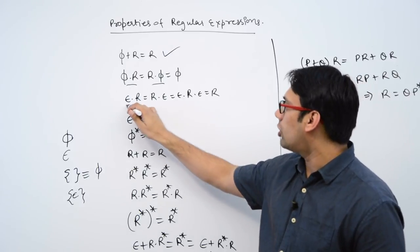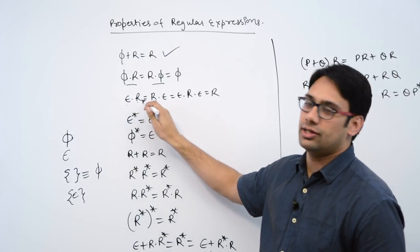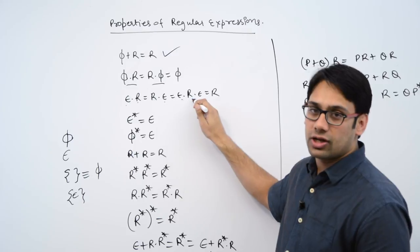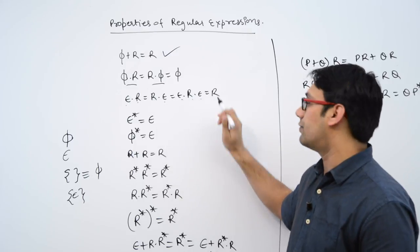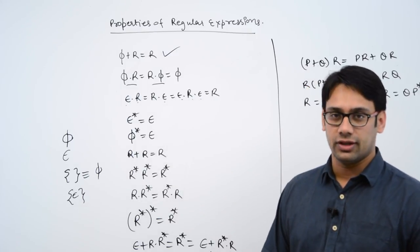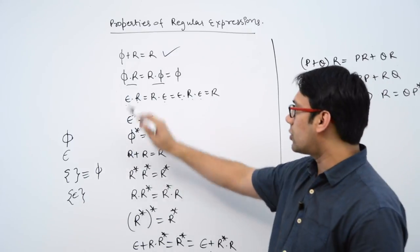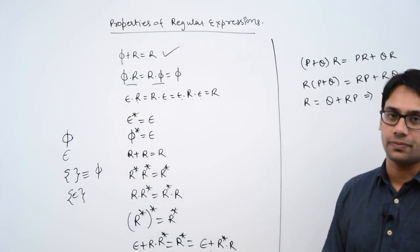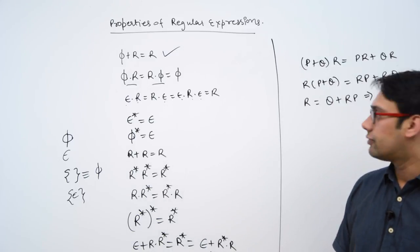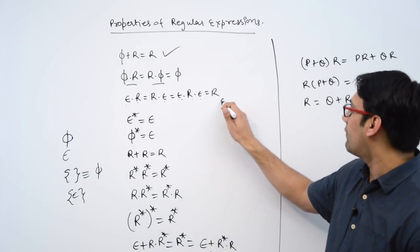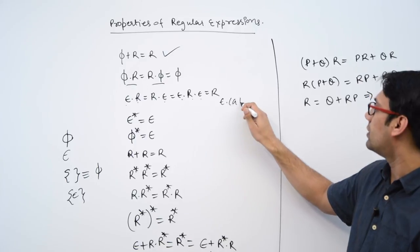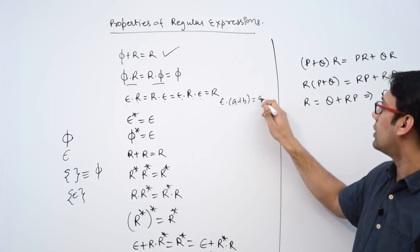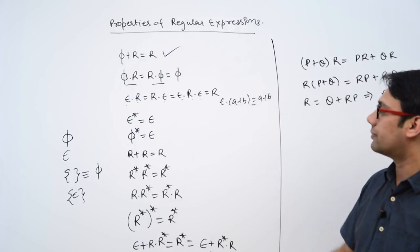Now, epsilon dot r is equal to r dot epsilon is equal to epsilon dot r dot epsilon, which is equal to r itself. Here epsilon is a string of length 0 and r is representing a regular expression. For example, epsilon dot (a plus b) is actually equivalent to a plus b only.